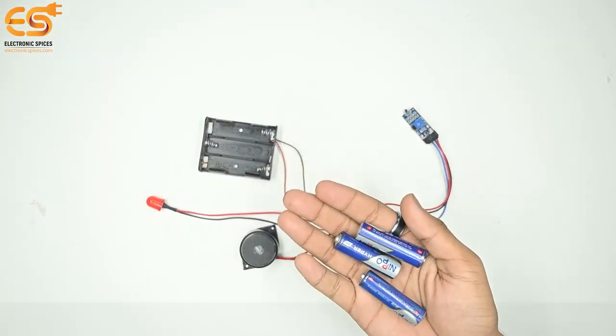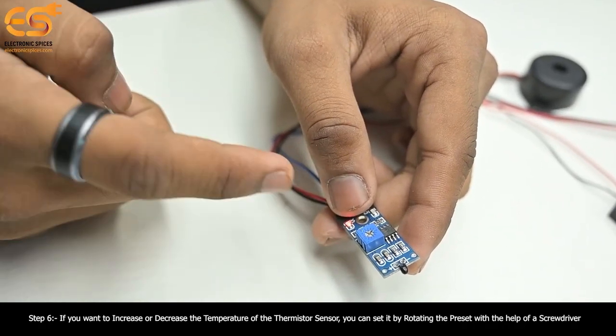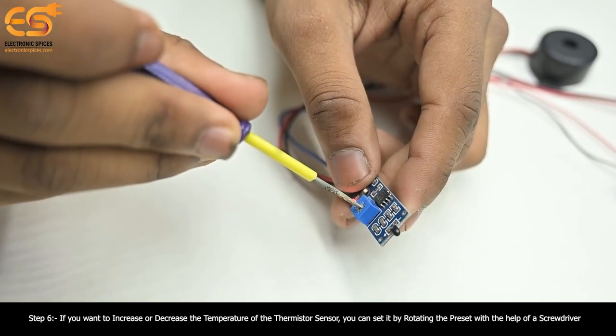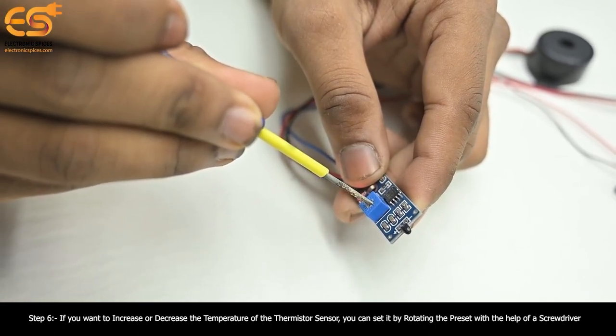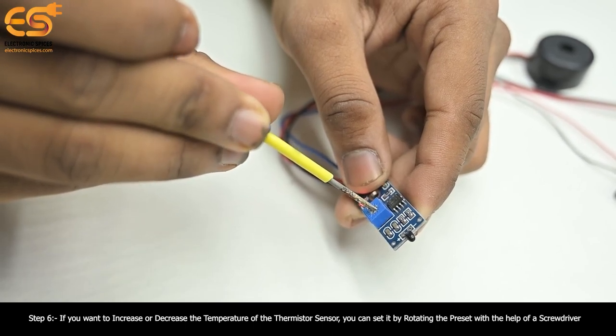Step five: put the battery in the battery holder. Step six: if you want to increase or decrease the temperature of the thermistor sensor, you can set it by rotating the preset with the help of a screwdriver.